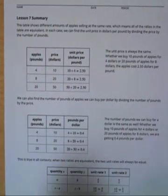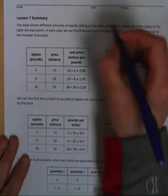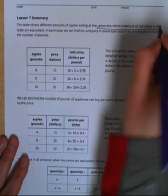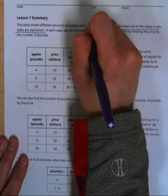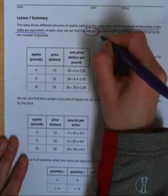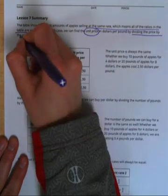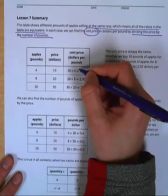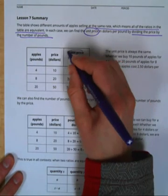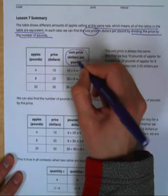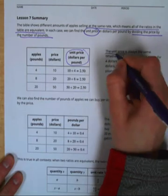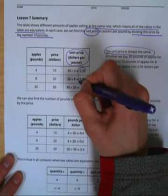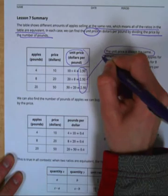We'll go over our lesson summary. If they have the same rate it means that all the ratios in the table are equivalent. That's really important. We can find the unit price by dividing price by number of pounds. So unit price is found by finding dollars per pound. Take your dollars divided by your pounds. Notice that the unit price is always the same. It's always two dollars and fifty cents in this table.